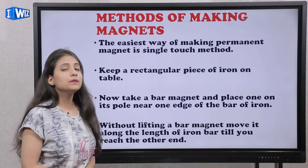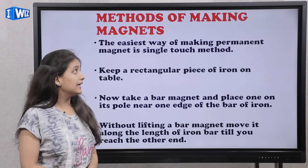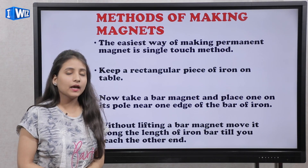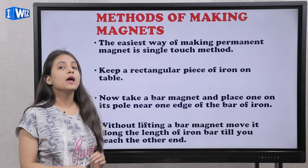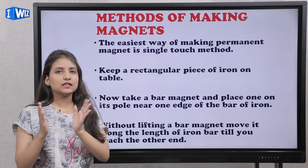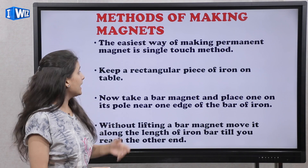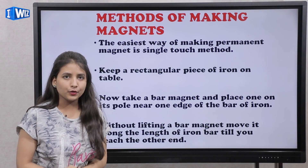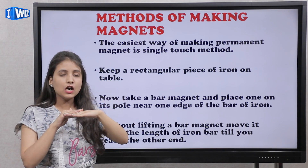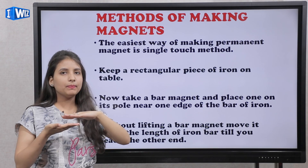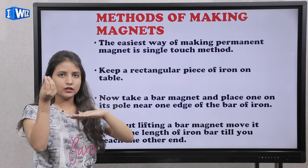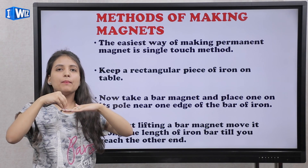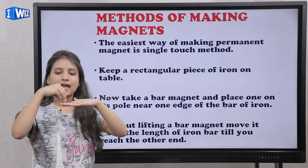Now we will talk about how we can make a magnet. There is a very easy way to make a permanent magnet — the single touch method. We will take a piece of iron, place it on the table, and put the bar magnet on the edge of the iron piece.